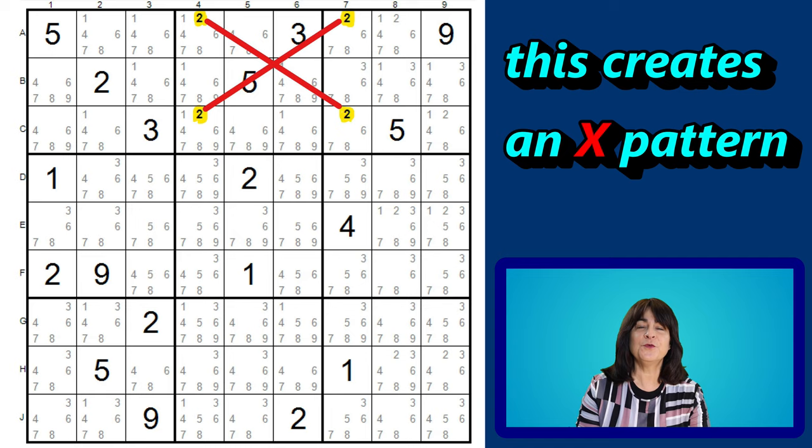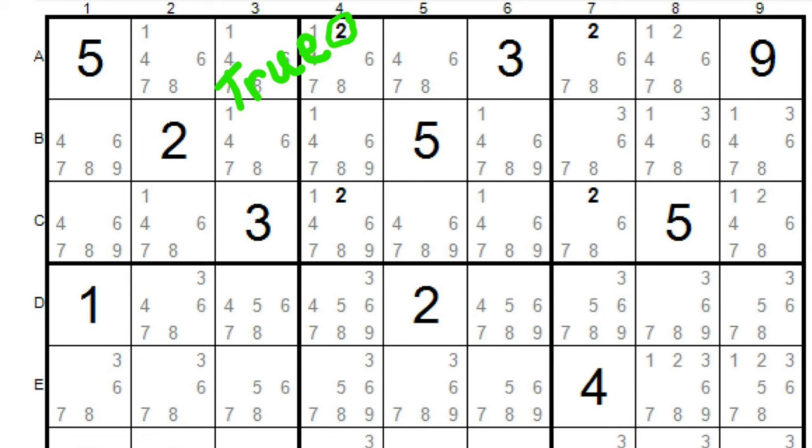Let's go through the logic of this pattern one more time, and then we'll see how to use it as a solving strategy. If this two in row A, column 4, is true, then this two in the same row, row A, column 7, can't be true. So the two in column 7 must therefore be in row C. So in this scenario, this is what the twos would look like.